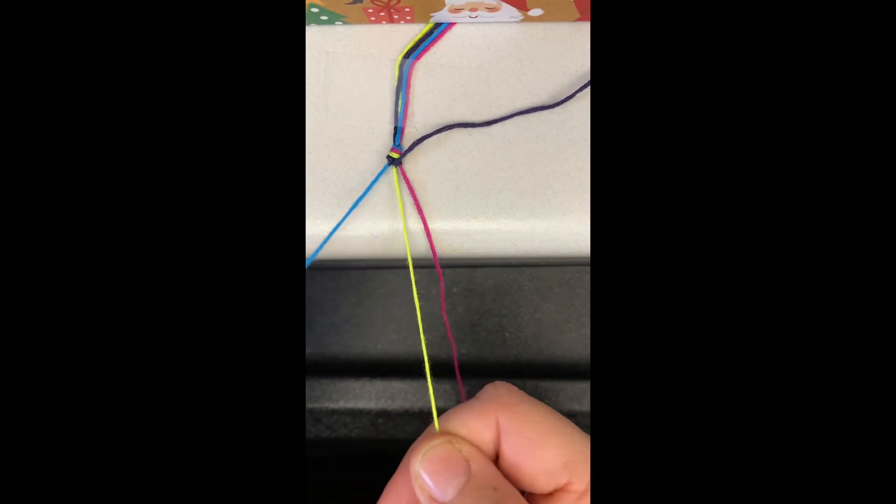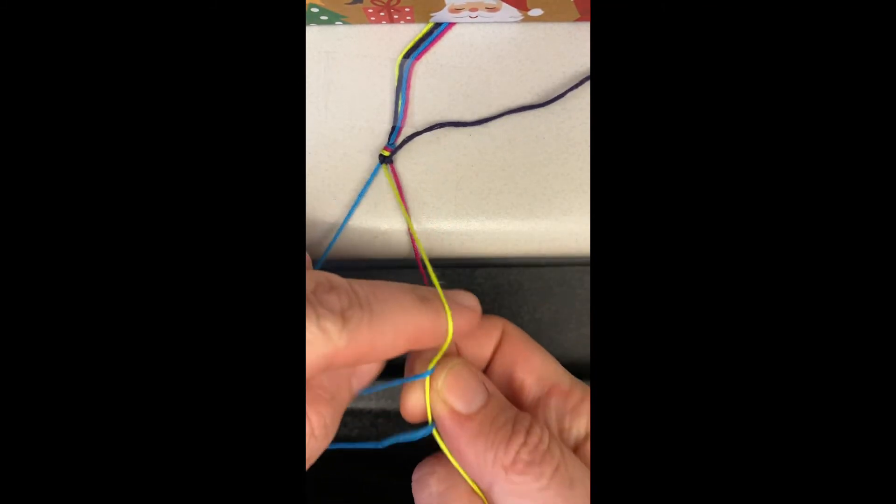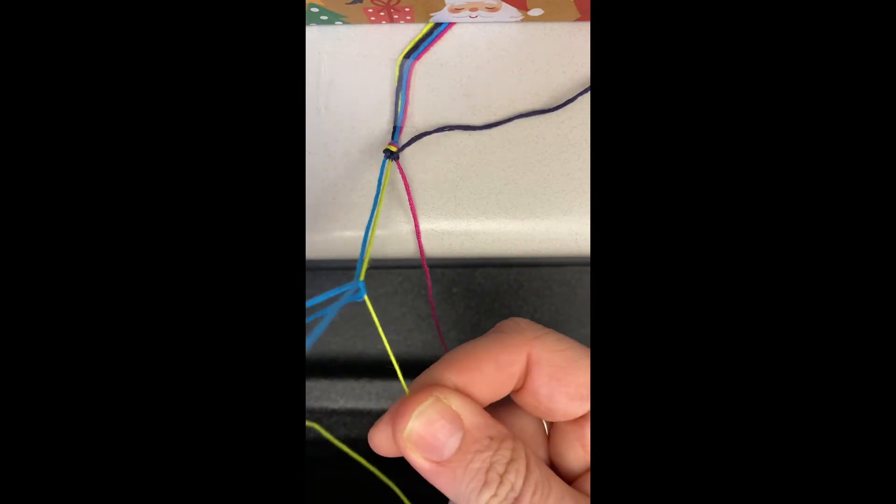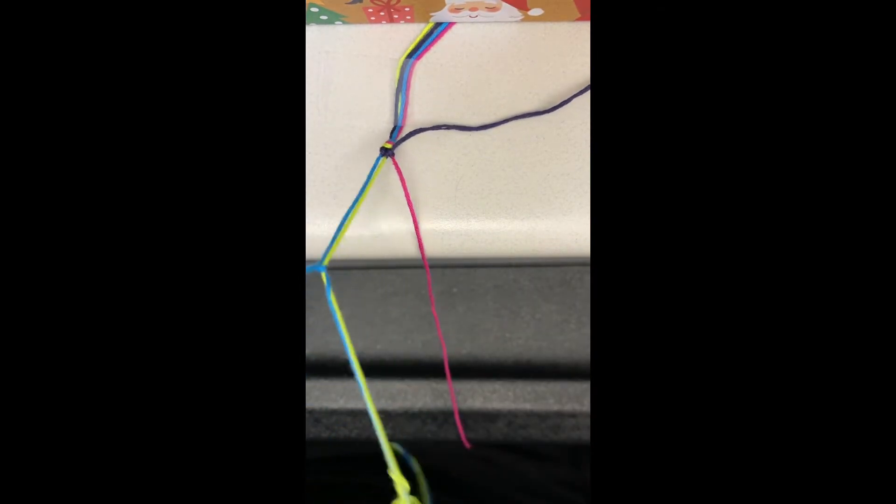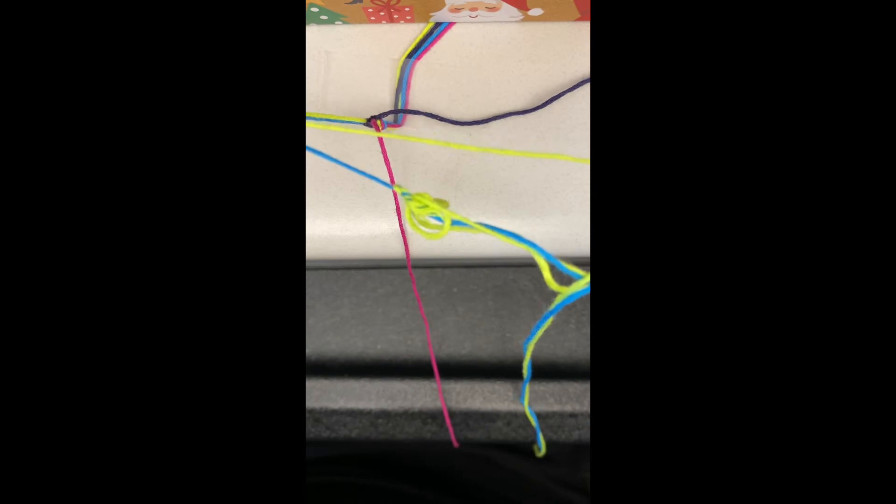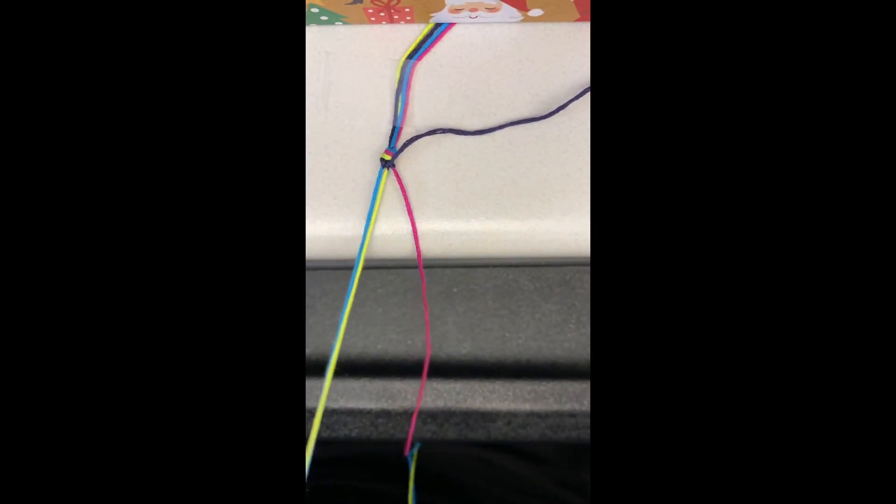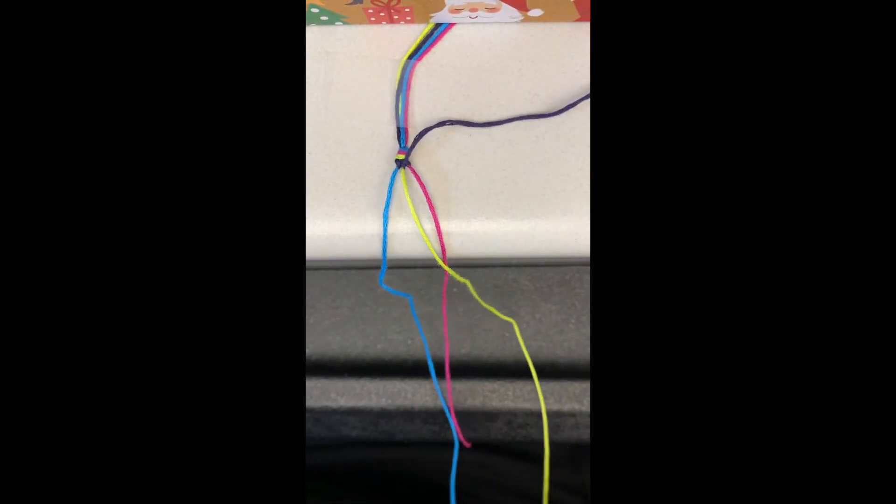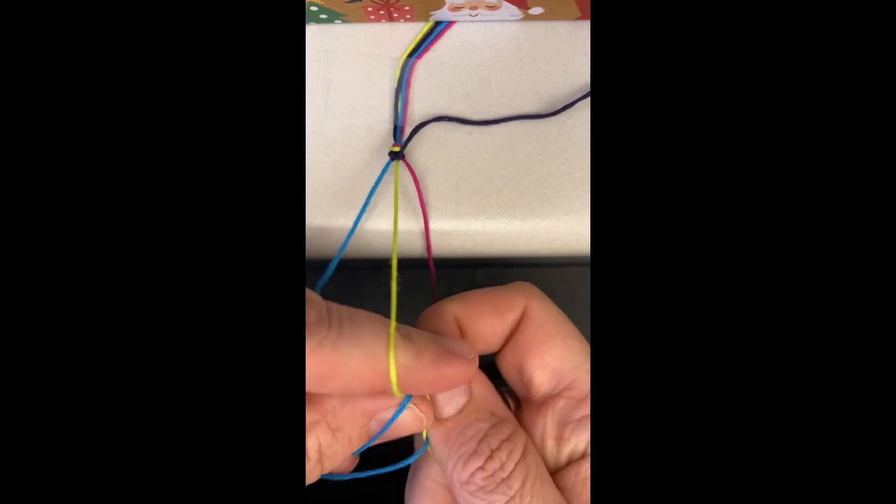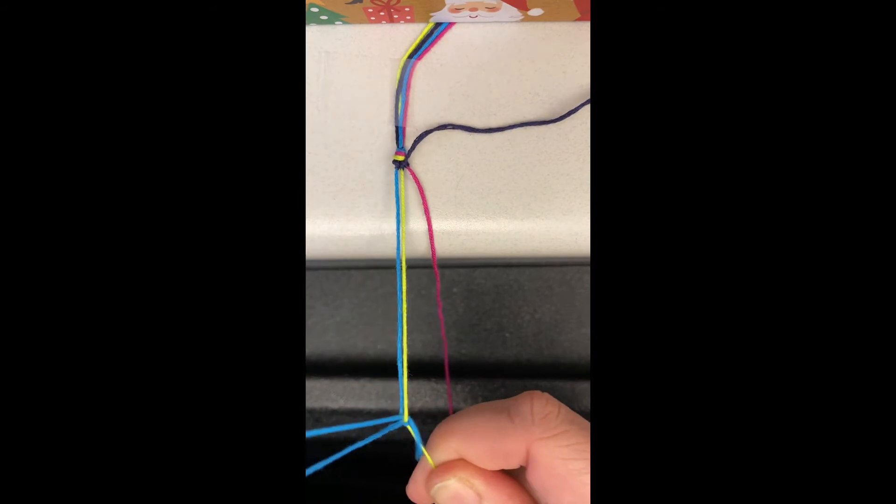I do recommend going slowly. As you can sort of see in my video, sometimes the strands get tangled. So you want to make sure that you are going real slow. See, there's my tangle. So that that doesn't happen to you. And if it does, don't panic. Just take a moment and pull the strands out straight and untangle them.